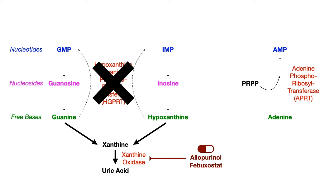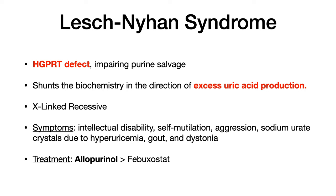For the purposes of USMLE or COMLEX, when they go after this on an exam, they're going to do it clinically — describing the symptoms, possibly giving you sodium urate as a buzzword. Something to be thinking about is the hyperuricemia causing those sodium urate crystals, because often they'll describe a very young baby or pediatric patient and show you a picture of a diaper with an orange-looking substance in it. If you see an image of a diaper with an orange-red spot, pick Lesch-Nyhan syndrome — they're showing you sodium urate crystals that were urinated out, and those crystals appear orange.